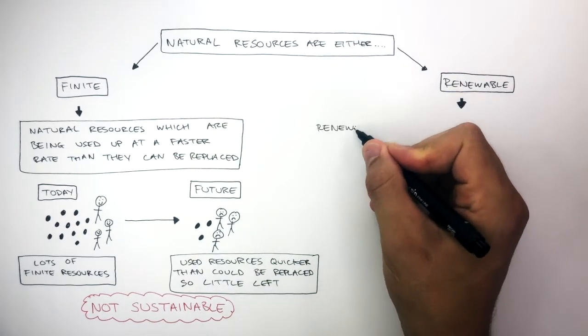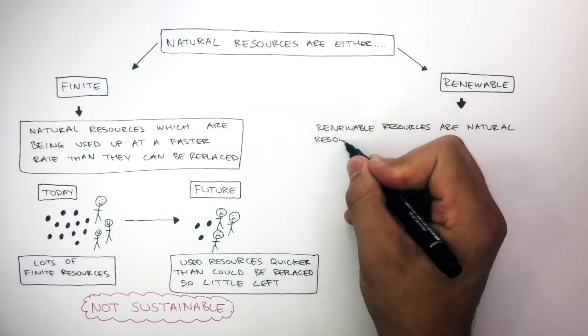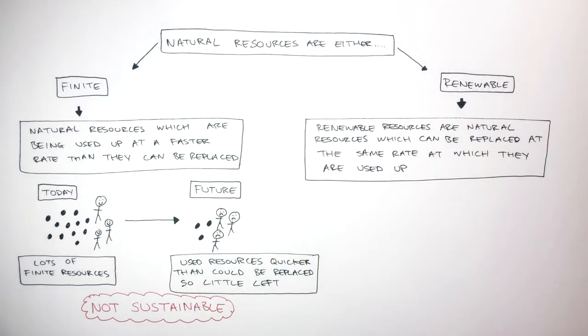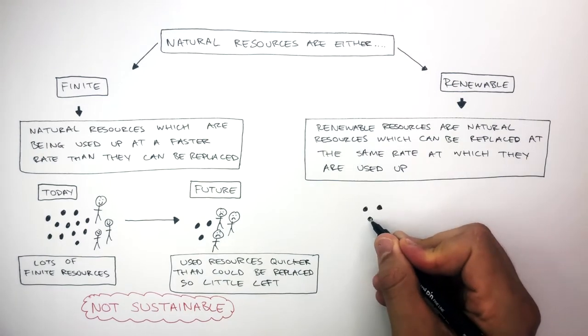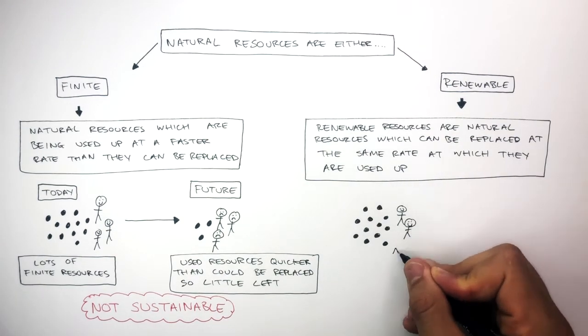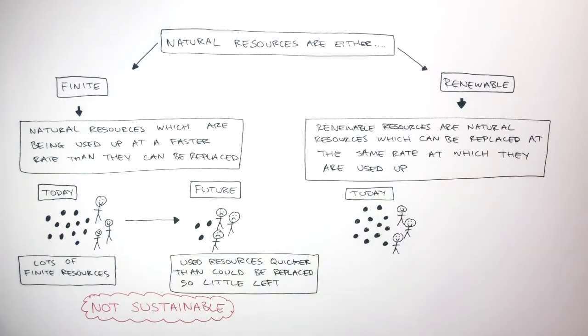Whereas renewable resources are natural resources which can be replaced at the same rate at which they are used up. So in this example, we have lots of renewable resources. So society is happy. Therefore, in today's world, we have lots of renewable resources. So society is happy.